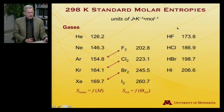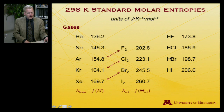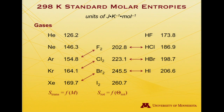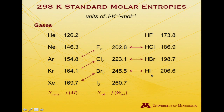The last set of gases are the hydrogen halides: HF, HCl, HBr, and HI. Again, entropy increases going to heavier halogens. Comparing similar masses — F2 is close to HCl in mass, Cl2 to HBr, and Br2 to HI — the entropy decreases as we go from the dihalogen to the hydrogen halide of similar mass.